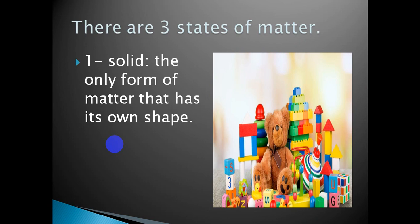The first state is solid. Solid is the only state of matter that has its own shape — it keeps its own shape and doesn't change. If you look at this picture, you will find many toys. They are different in their properties — different in shapes, colors, size, and texture — but all of them are solid. They keep their own shape. The shape of a teddy bear does not change whether it is here, on your bed, in a bag, or on a chair. The shape of a solid stays the same.